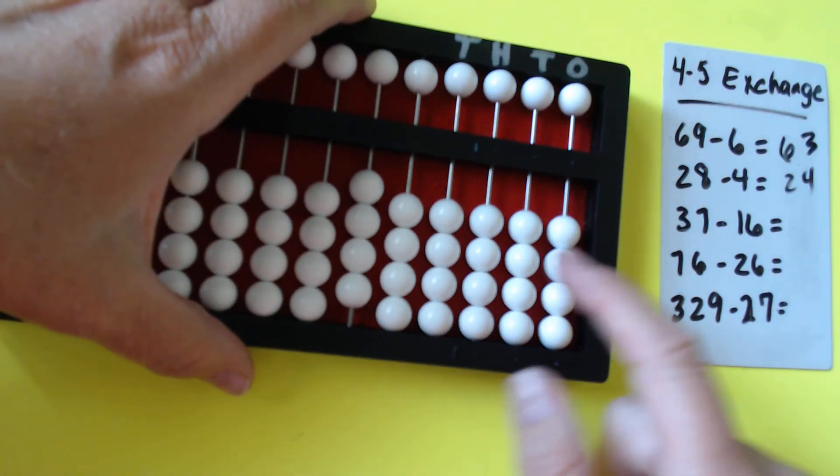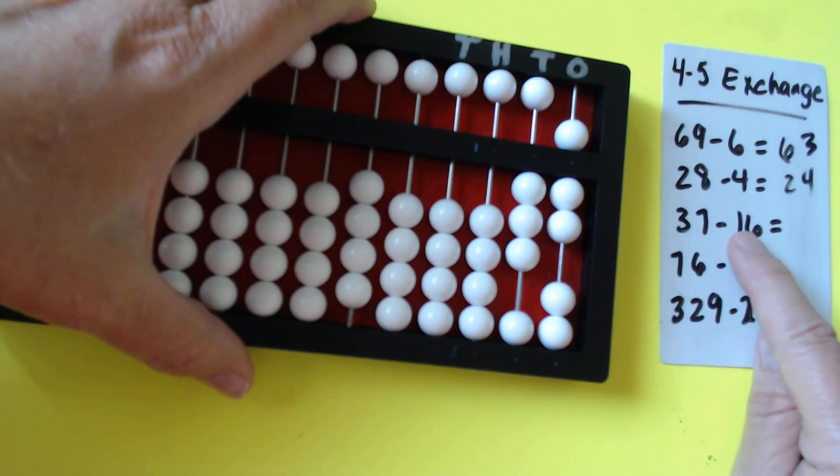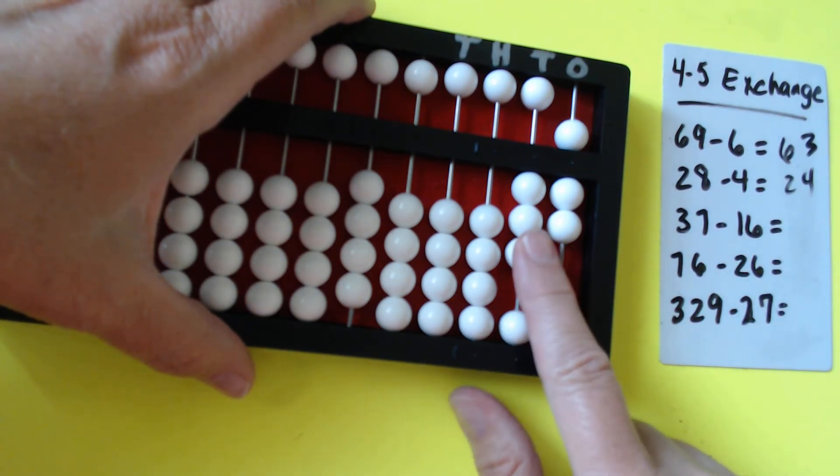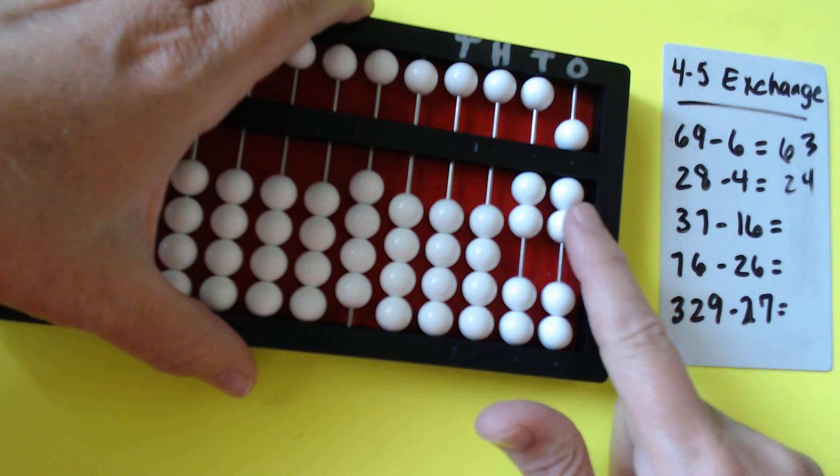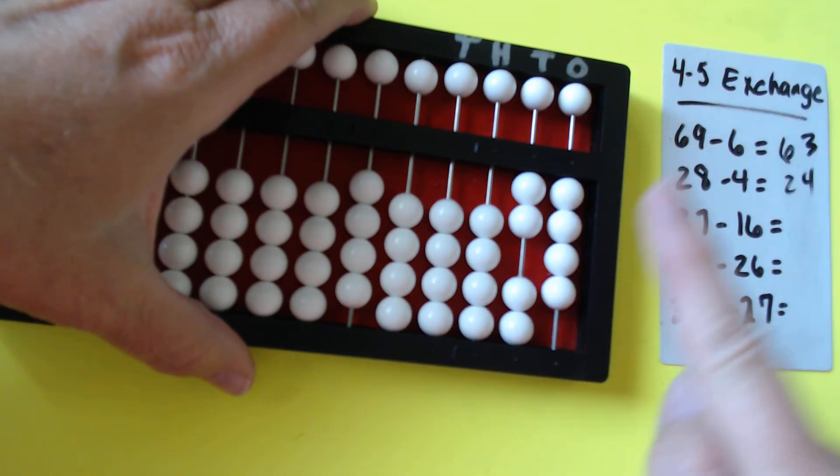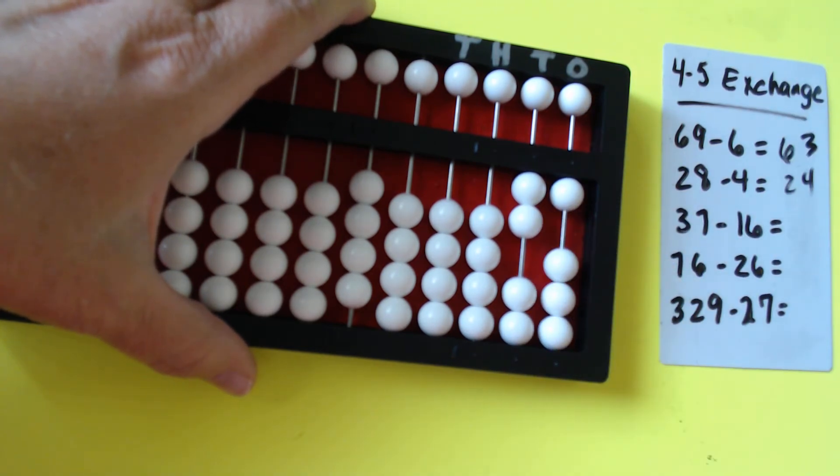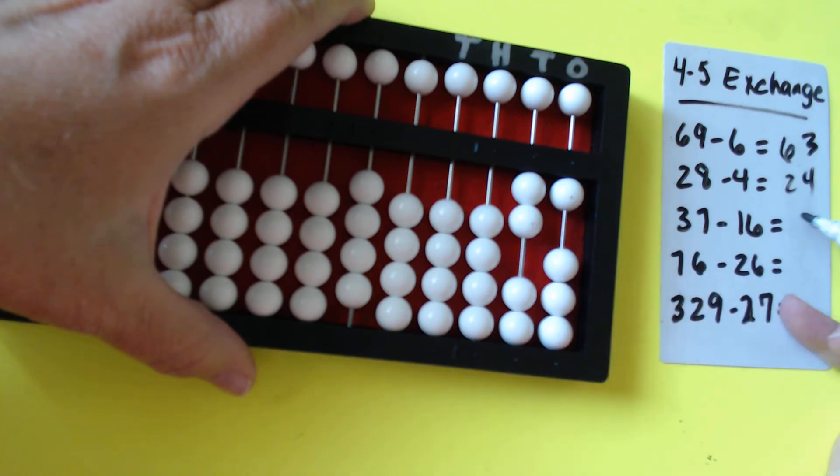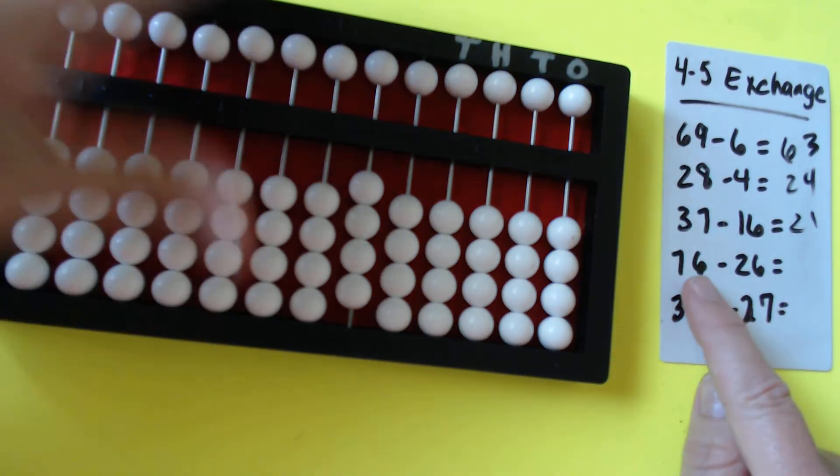37 minus 16. We're going to take away the 1 bead in the tens column and then 6 here: 1, 2, 3, 4, 5, 6. And that gives us 10, 21. Alright, easy, right?